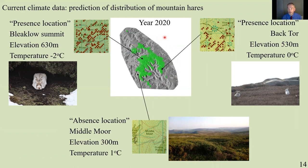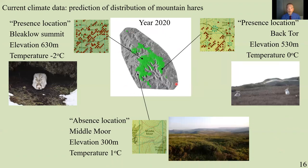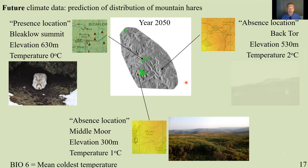What happens under climate change? Our model was built from 2020 climate data. The mean winter temperature for the year 2050 is going to be 4 degrees warmer. We use this model and compare it with locations to ask: where will mountain hares be? Previously for 2020 it was 160 square kilometers, but for 2050 the range has contracted. At Bleaklow it's now zero degrees and there are still a few mountain hares, but at Back Tor it's now two degrees and those mountain hares have disappeared. At Middlemore there are still no hares — so overall, a range contraction.